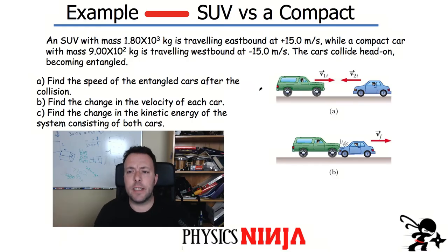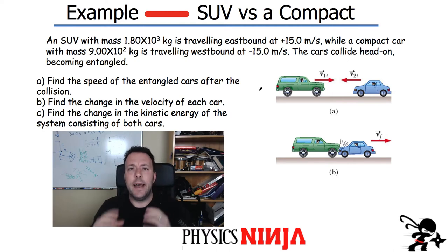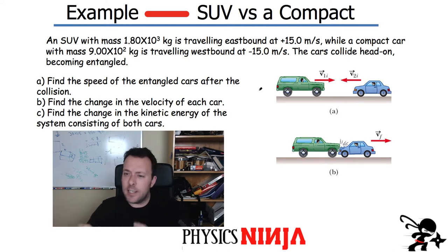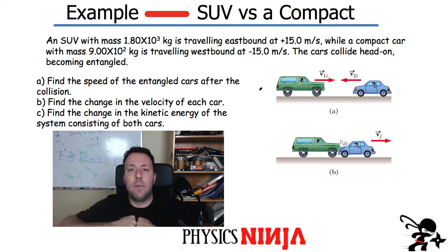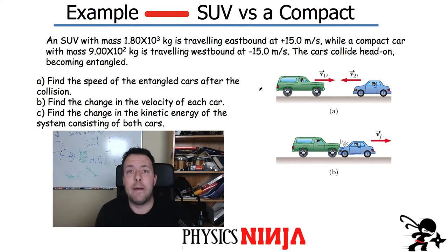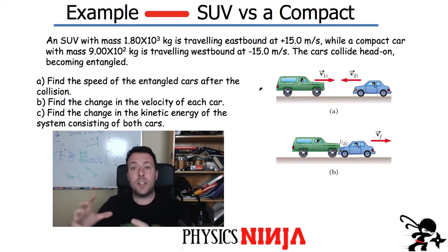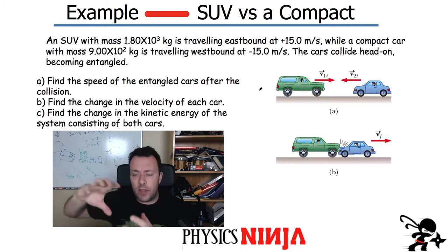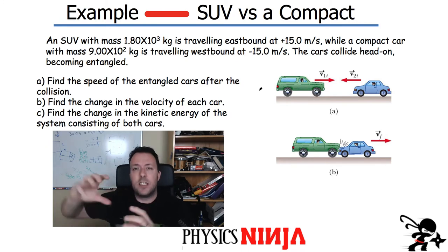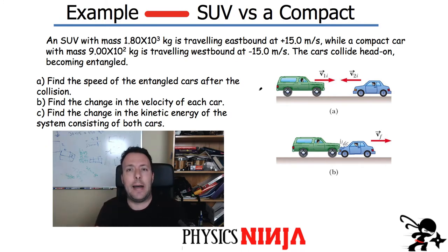Hi everybody, Physics Ninja here. Today we've got a collision problem — a collision between an SUV and a compact car. The SUV has twice the mass of the car and they're colliding head on. Before the collision they're moving at the same speed, and we have three questions to look at. The first one is what is the speed after the collision when everything is stuck together and moving as one pile?